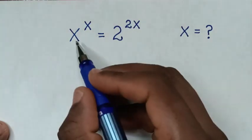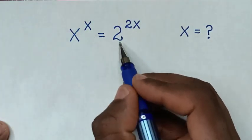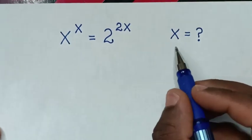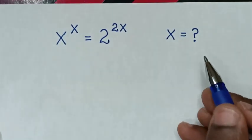Hello, how to solve x power of x is equal to 2 power of 2x, to find the value of x from this equation.